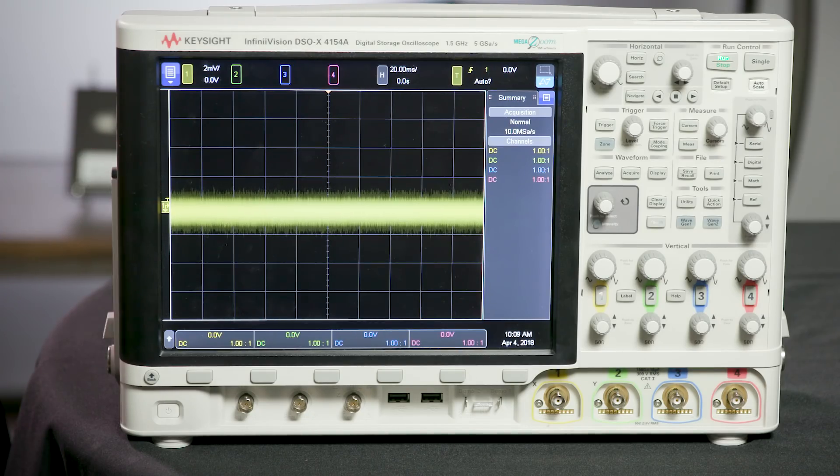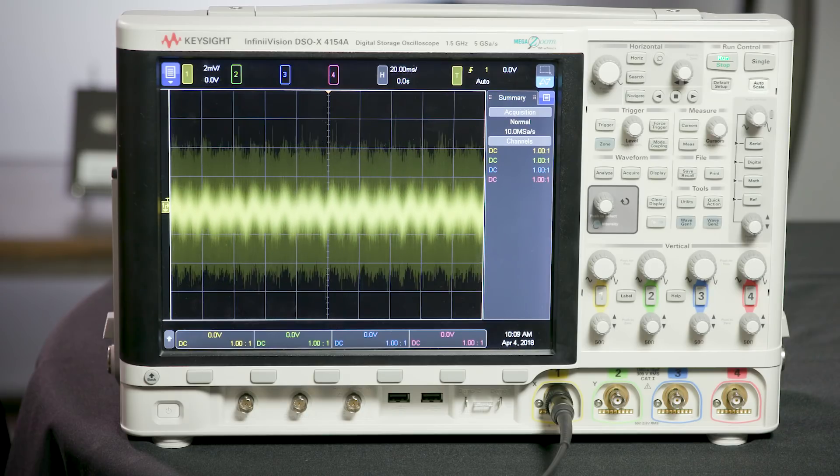Now if I attach a probe to the scope, you can see the noise increases significantly. It's worth noting that this phenomena will happen with all probes. This happens because you're basically connecting an un-terminated antenna if we aren't probing on anything, so it's picking up noise from around the room. This noise level will be reduced when your probe is well grounded, but it's worth noting this increased noise level just by adding the probe.